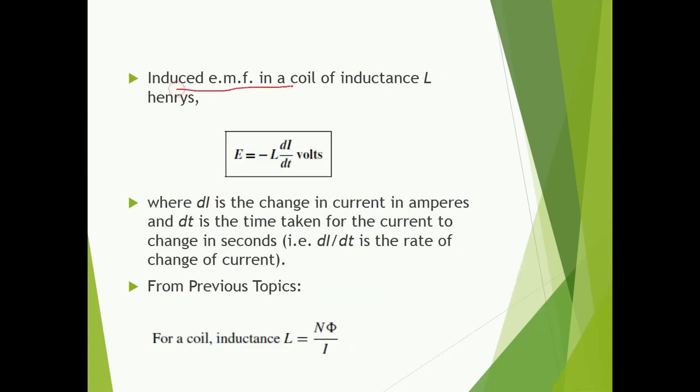Induced EMF in a coil of inductance L — if the value of inductance L is given to us, the formula is E is equal to minus L dI/dt, where L is the inductance given in Henry and dI/dt is the change in current with respect to time. Also, inductor L is equal to N phi by I, from the basics of inductance.